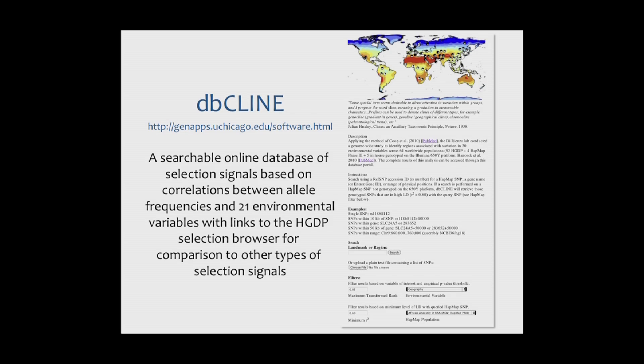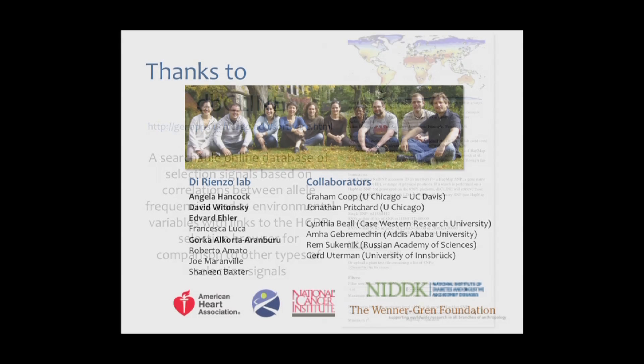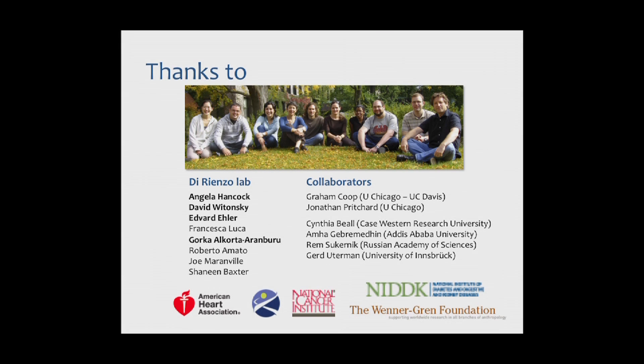I'd like to mention the DBKline database, generated in my lab, available at our URL, where you can search for signals of environmental correlations with 21 environmental variables, with links to other selection browsers. Finally, I want to thank the people in my lab and my collaborators who contributed to this research.